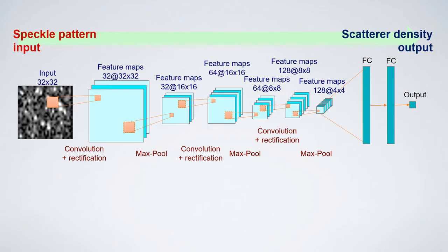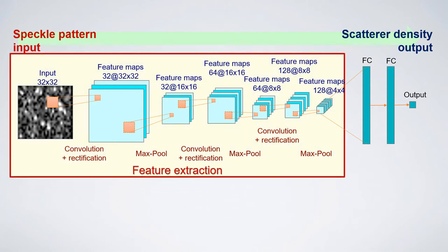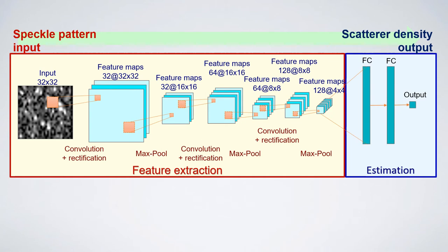Let me explain our CNN architecture. It consists of feature extraction layers and estimation layers. The former consists of a stack of convolution operations followed by rectification and max pooling layers. On the other hand, the estimation layer consists of two fully connected layers and an output layer. The CNN is trained to estimate the scatter density from the 2D cross-sectional speckle pattern. Since the intensity and signal-to-noise ratio are randomly selected, the CNN is expected to use the spatial pattern of the speckle, not the signal intensity, to estimate the scatter density.